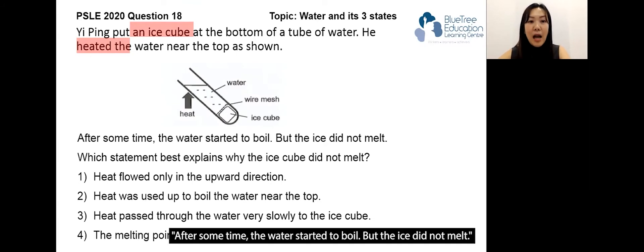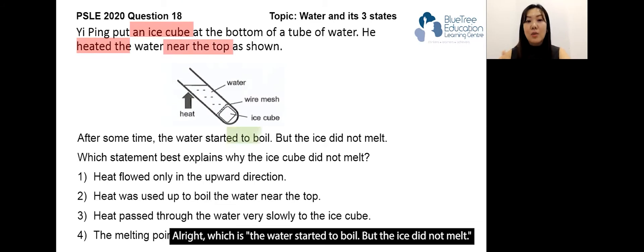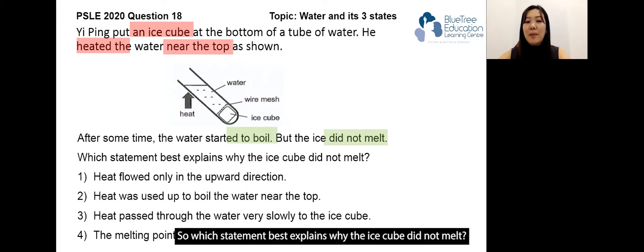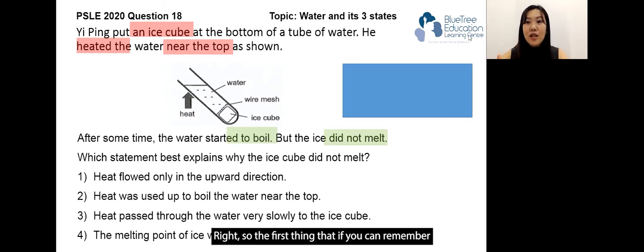Let's continue reading the question. After some time, the water started to boil but the ice did not melt. Let's highlight that key information: the water started to boil but the ice did not melt. Very interesting situation. Which statement best explains why the ice cube did not melt? Before we go to the options, let's do a concept check. The first thing to remember is that ice needs to gain heat in order to melt.